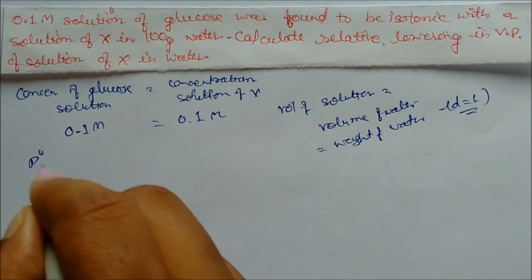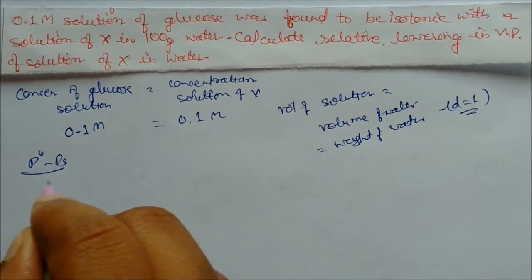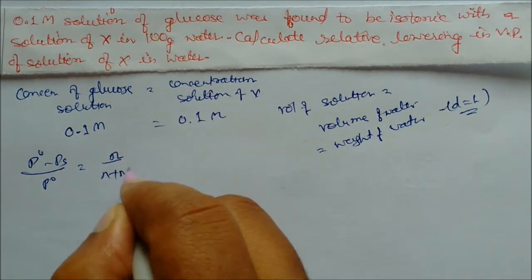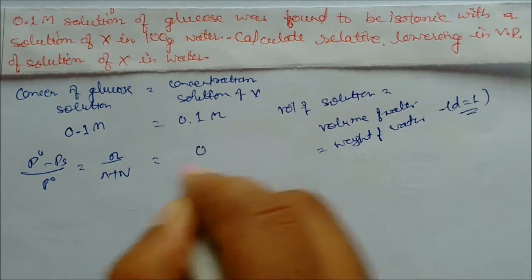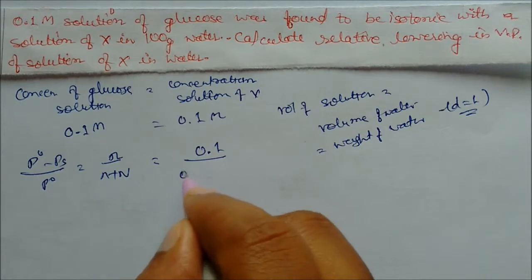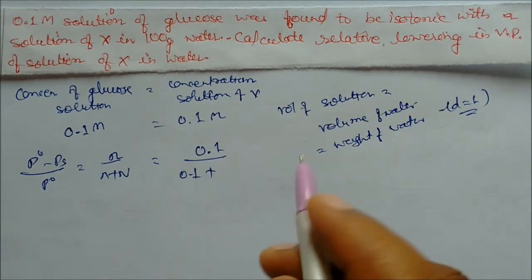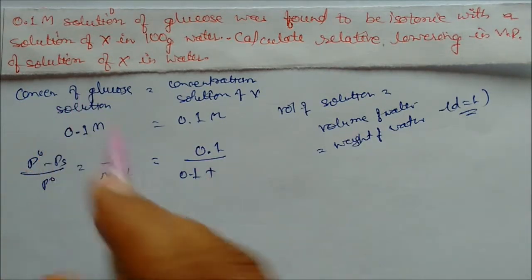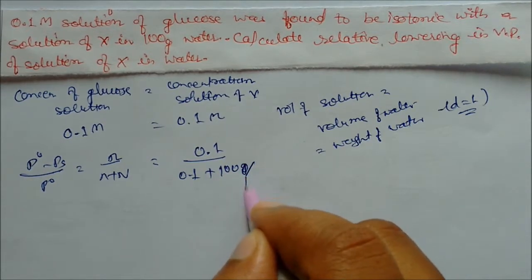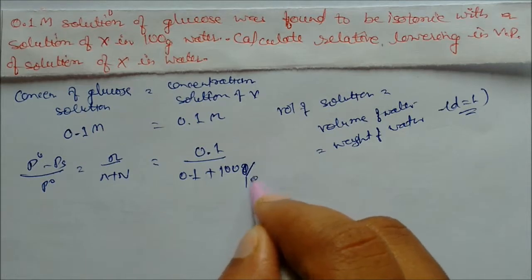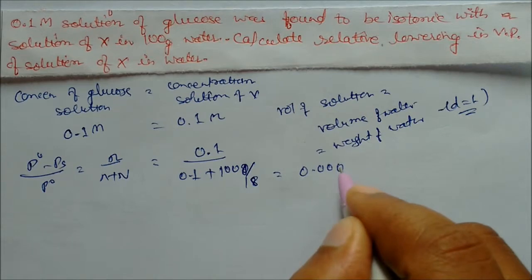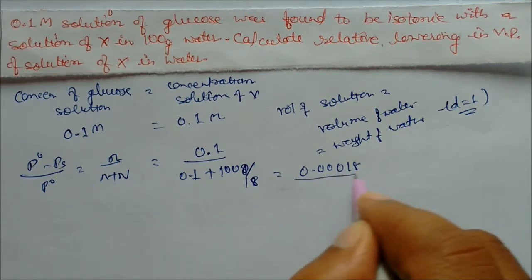Applying the same equation: P naught minus P_s by P naught equals N divided by N plus capital N. For this dilute solution, molarity is 0.1 divided by 0.1, and the volume of water per liter is 1000 grams divided by 18. On solving, the relative lowering of vapor pressure comes out to approximately 0.00018. So this is the answer.